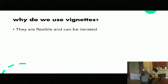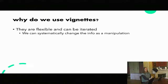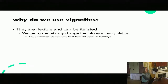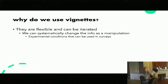They're quite flexible and can be iterated, so you can look at these things across multiple domains. You can systematically change information as a manipulation. When we write a vignette, we can make a baseline vignette where we're just changing one or two things — this is sort of an experimental design. We end up with something that is much more controlled, where we can actually vary information presented to people in a way that is experimental.